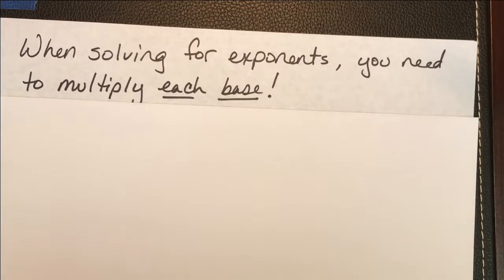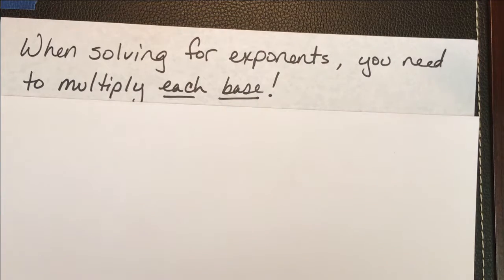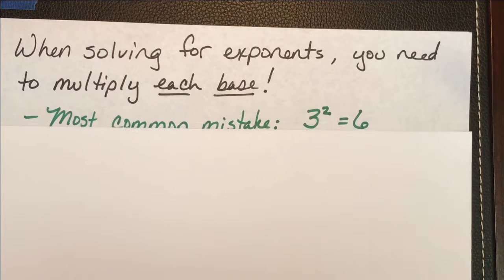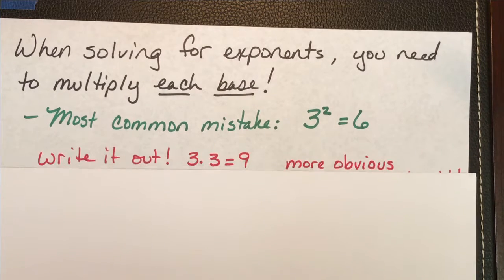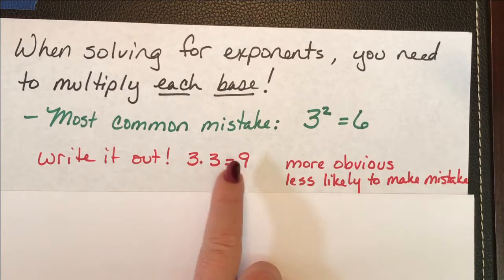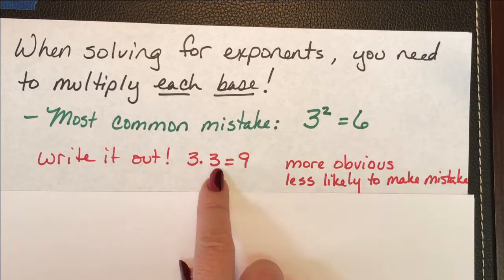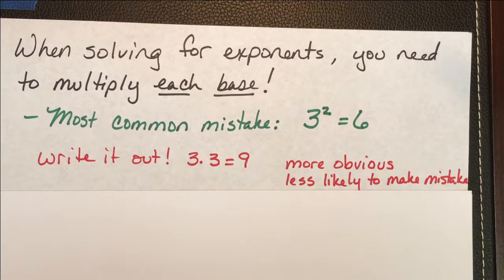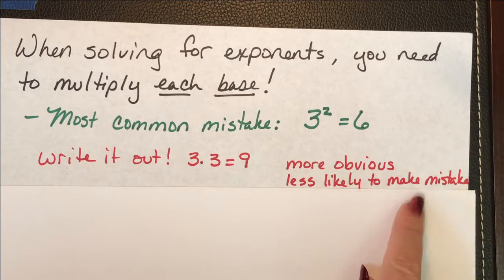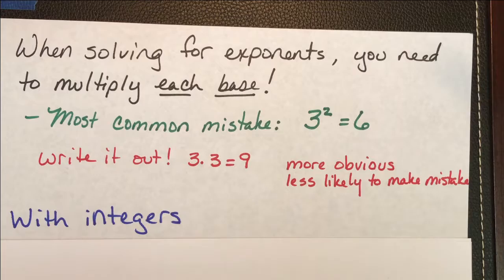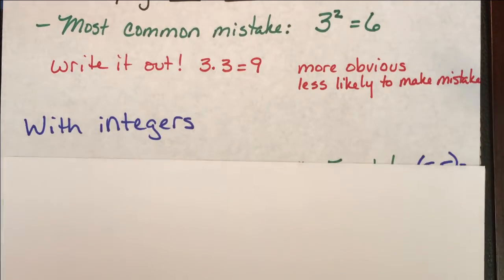One thing to remember when you're solving for exponents is that you need to multiply each base. Sometimes, particularly when these problems are easy, mistakes are also easy because you end up doing them really quickly. It makes more sense to write it out. Take a minute to write it out so you can actually see what you're doing and your brain can compute it better. You are much less likely to make a mistake. I'd rather it take me an extra minute and a half to do an entire set of problems than to have a bunch wrong.